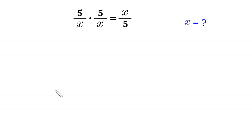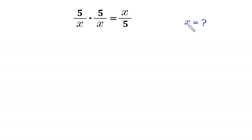Welcome to how to solve this very nice algebra equation: 5/x times 5/x is equal to x/5. We need to find all possible values of x. First of all, we multiply both sides of this equation by 5/x.